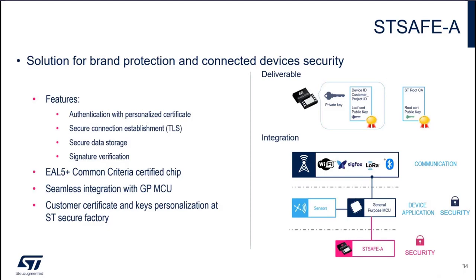The deliverable is a pre-provisioned STSAFE A110 with the device private key and device certificate already loaded. In our package, it's integrated with SBSFU via KMS so it can be used seamlessly by the application — you don't even notice you're using a secure element. Your application relies on Amazon FreeRTOS, which uses EmbedTLS for cryptography. EmbedTLS is ported on top of PKCS11, which is provided by KMS. KMS then routes operations either to STM32 or to STSAFE A110. The pre-provisioning in the ST secure factory is the first valuable asset of our solution — the customer doesn't need to care for the private key and its protection.